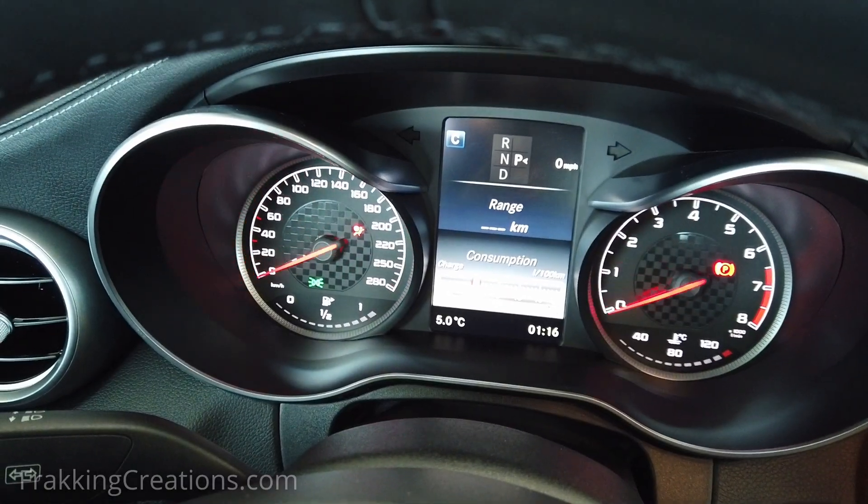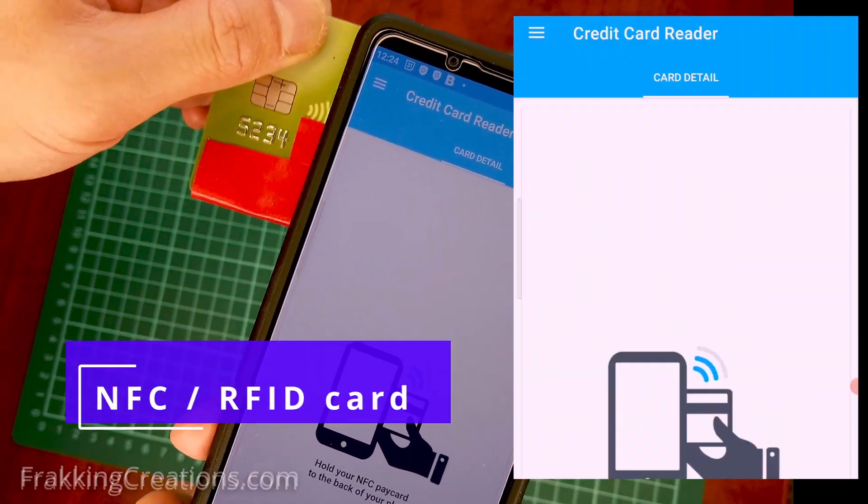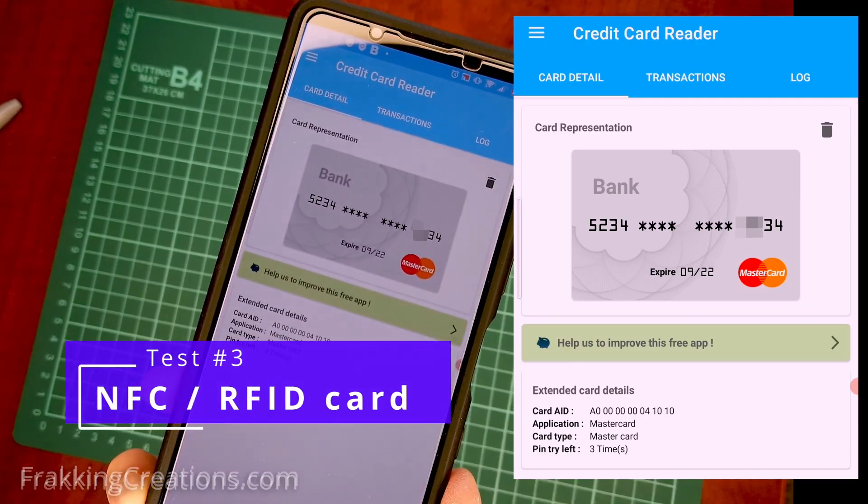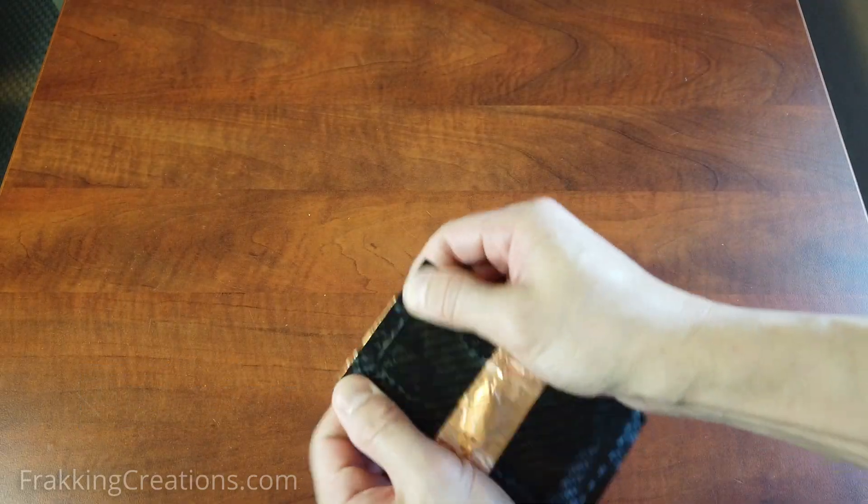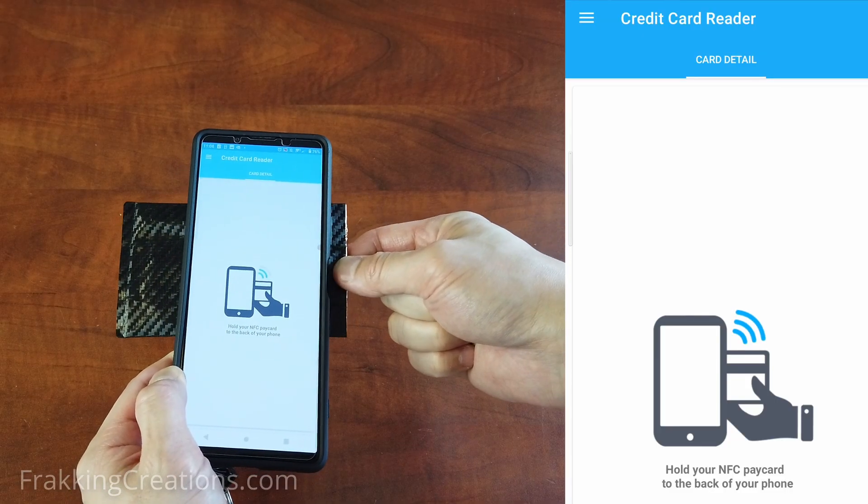The third test is to test with an NFC credit card. The card can be read easily using this card reader app as can be seen here. Once the card is sealed in the bag, we no longer can read the card.